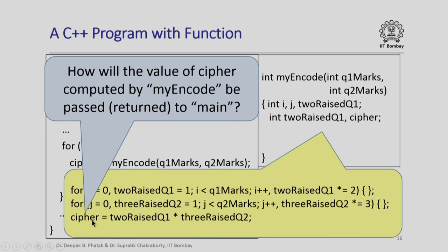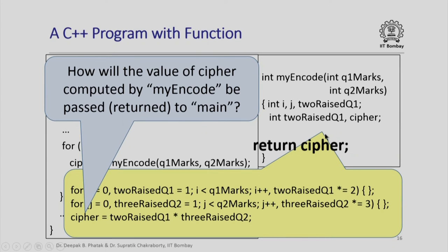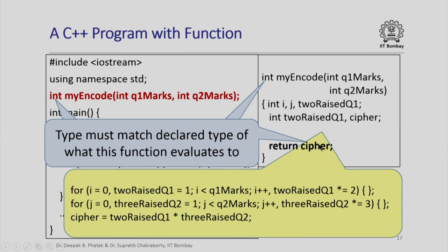My_encode computes cipher, but we want this value returned back to main. We do that with the special statement 'return cipher'. This return statement says: go back to the calling function and give it the value cipher that I have computed. The type of the return value must match the declared return type of the function, which in this case is integer.